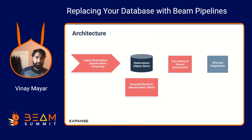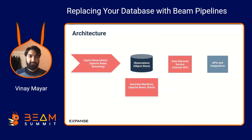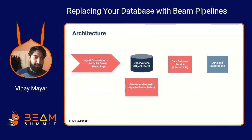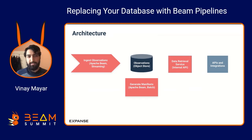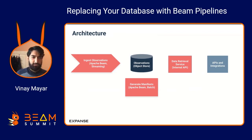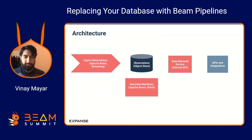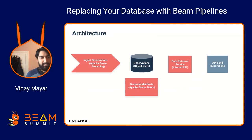At a high level, the architecture has this observations object store in the middle where we store observations. We need a streaming Beam pipeline to ingest observations into that object store, a batch Beam pipeline called 'generate manifest' to compute manifests — summaries of what subdirectories and files are available — and an internal data retrieval service that implements the logic of how to use those manifests to retrieve the right data. We then power our APIs and integrations off this internal service.